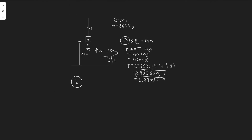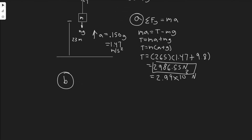For B, what they want us to find is the net work done on the load. The formula for work is force times distance times the cosine of theta. We need to know the net force acting on it, the distance it travels, and theta — which is the angle between the direction of travel and the force acting on it. The first thing we need is the net force.